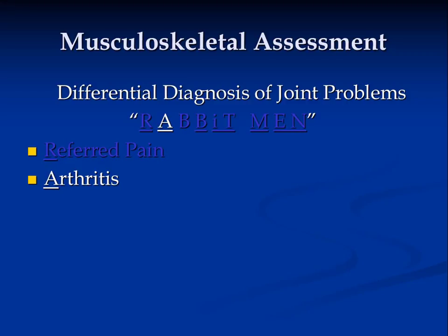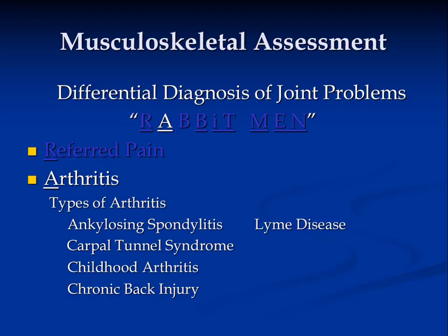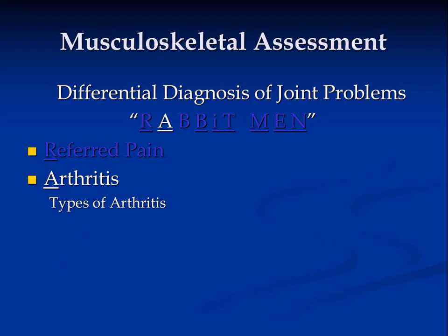Next, we would determine if the joint problem was because of an arthritis. Types of arthritis include ankylosing spondylitis, carpal tunnel syndrome, childhood arthritis, chronic back injury, Lyme disease, osteoarthritis, osteoporosis, and Paget's disease. Some individuals will present with conditions that require further evaluation or examination that affect the joints, and you must be aware of these.